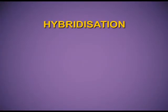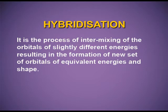Today's topic is hybridization, which was introduced by Pauling. It is the process of intermixing of orbitals of slightly different energies, resulting in the formation of a new set of orbitals of different shape. That is, orbitals of slightly different energies and different shapes are intermixed and we get a new set of orbitals, which are known as hybrid orbitals.